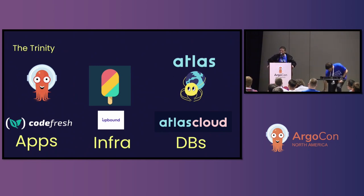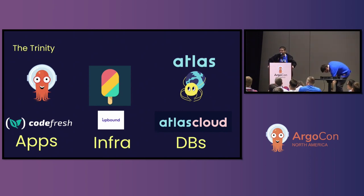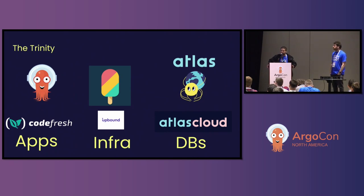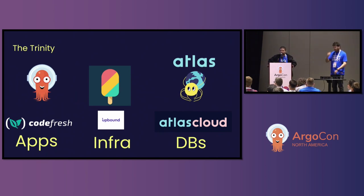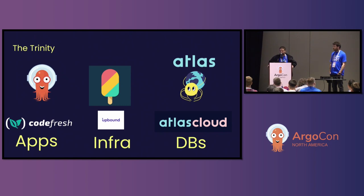This is one of the most important slides of the presentation. Many people come to us and say: I love ArgoCD, it's great for applications, but I have other stuff that is not Kubernetes — what do I do? If you want to use ArgoCD with infrastructure, the answer is Crossplane — check out the project if you haven't seen it. And now, if you want to migrate databases with ArgoCD, the answer is the Atlas operator. So you have a trinity of tools that allow you to apply ArgoCD to everything and have a uniform way of working with all kinds of resources, regardless of whether they are in Kubernetes, outside of Kubernetes, or database migrations.